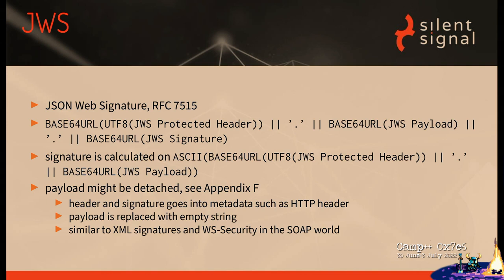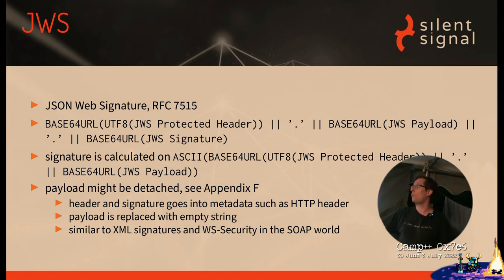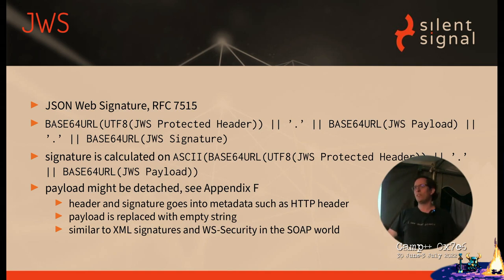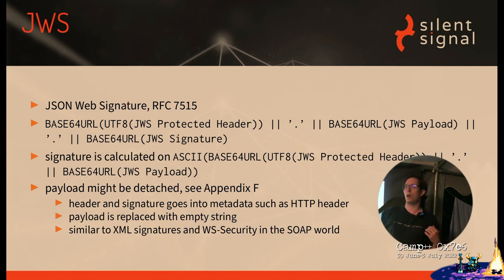The token is kind of a self-contained structure. If you look up this RFC, there is Appendix F, which says that in some applications you might want to remove the payload because you are putting the token — this is not your token, this is JSON Web Signatures. You can say that I just want to sign something and attach the signature as a kind of metadata. So for example, I sign an HTTP request and put the signature into an HTTP header, then obviously I won't have it inside the token, so this part is an empty string. This is the same as SOAP with XML signatures using Web Services Security.